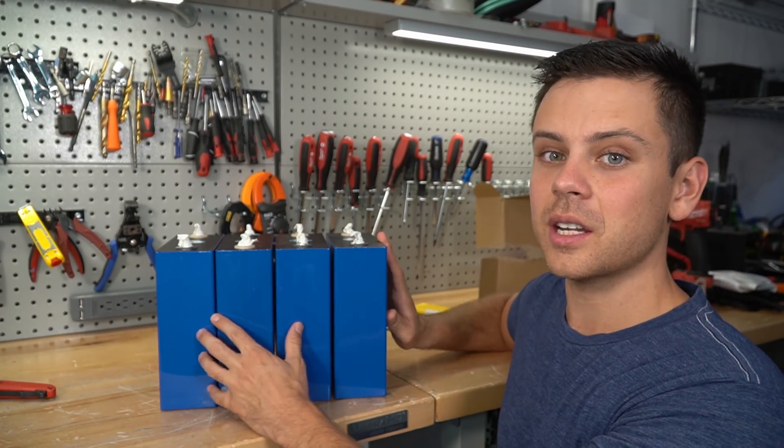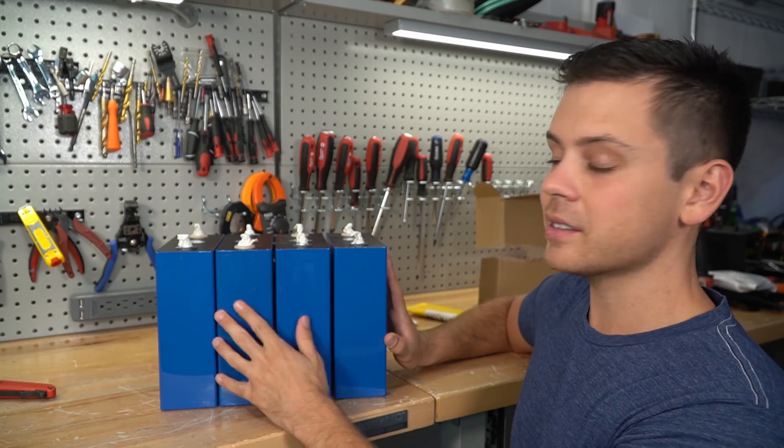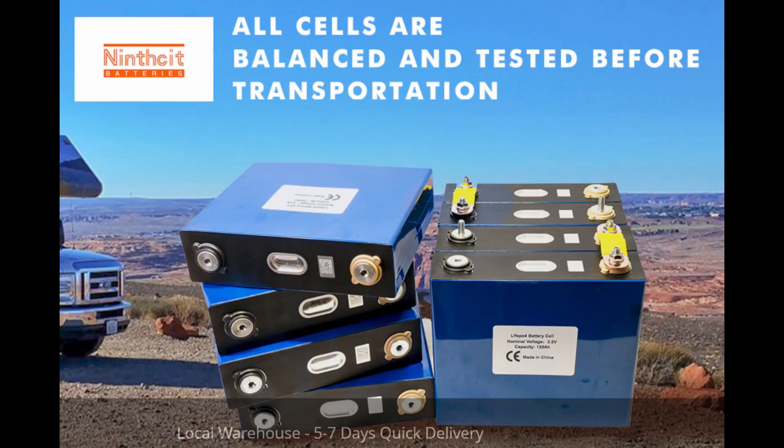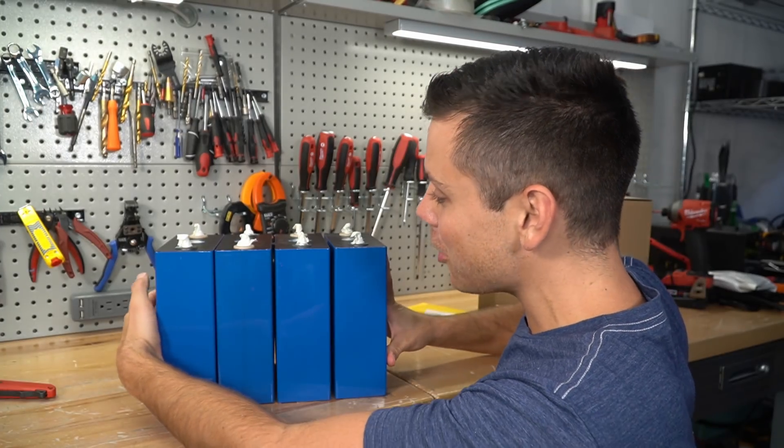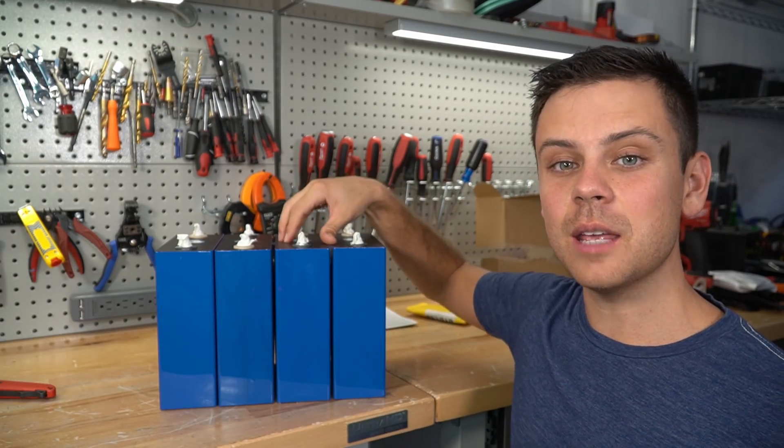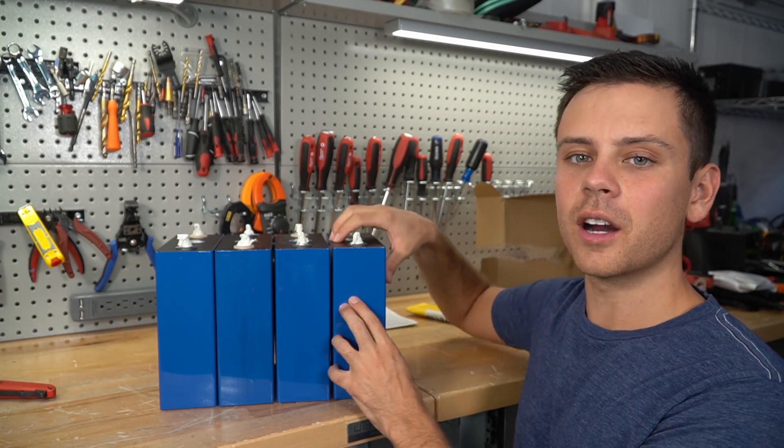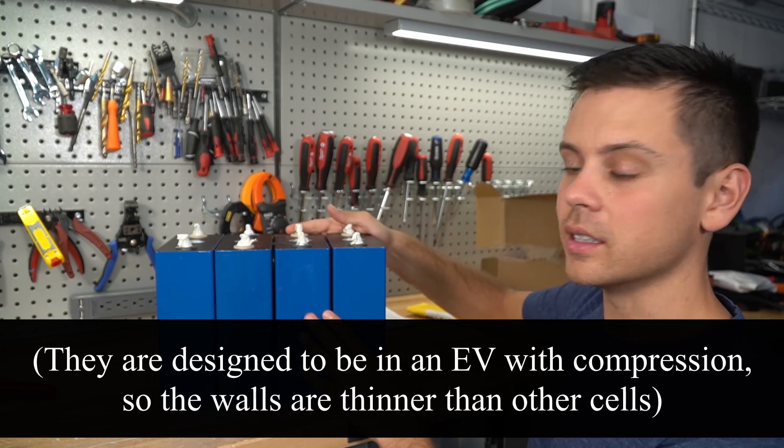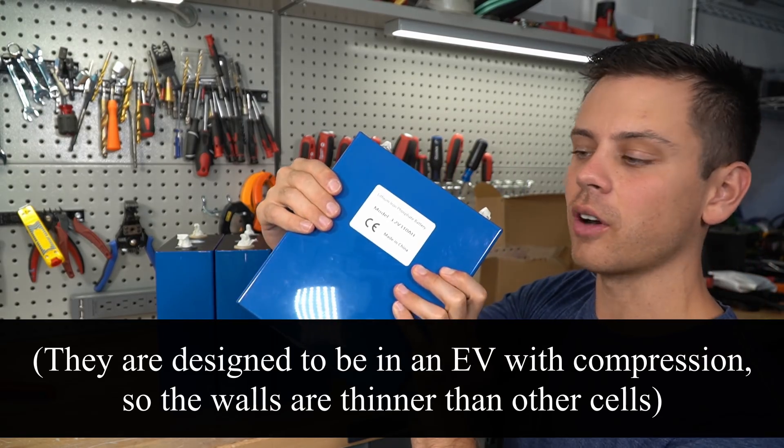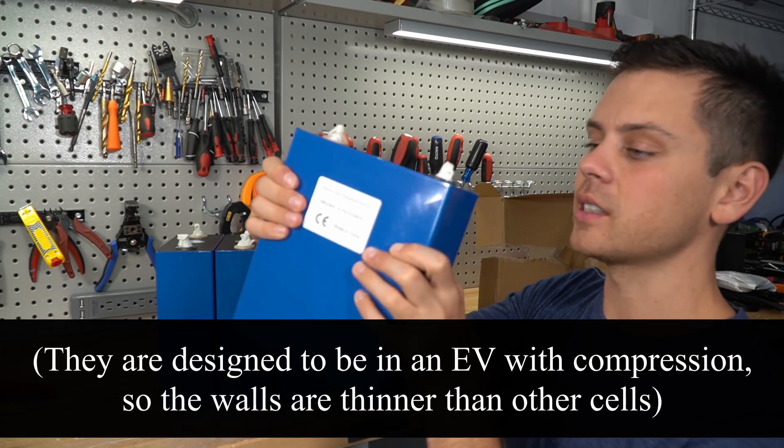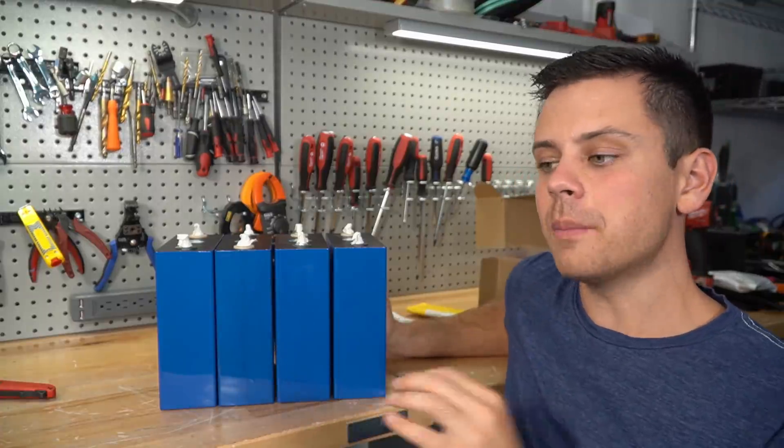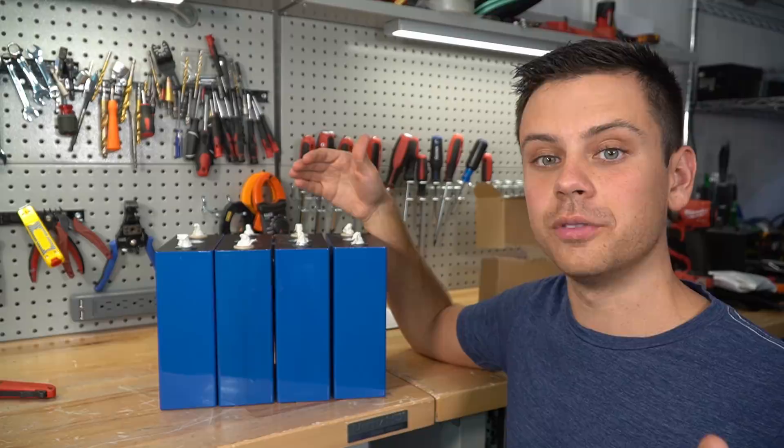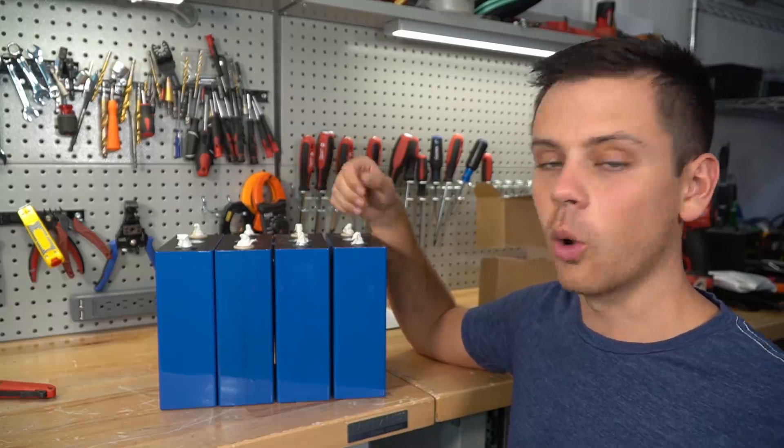So I went back online and found some other listings that cost about 30 percent more than the last set. This company specifically states that they have grade A matched cells and they are not bloated. Right before I got these cells, I got an email from a viewer saying that this size lithium iron phosphate aluminum case cell naturally swells, and that's just the way it is. Typically swelling is a sign of electrolyte degrading and gas formation inside the cell, but that might not be the case. My grade B cells might just need to be equalized.